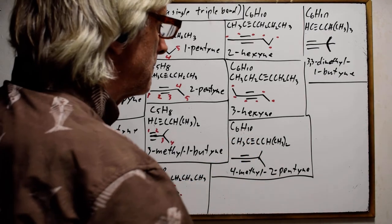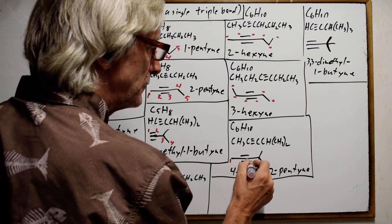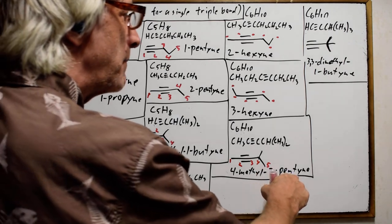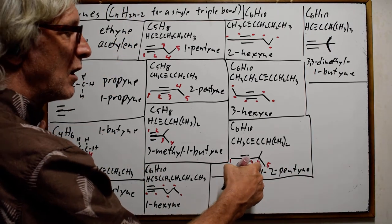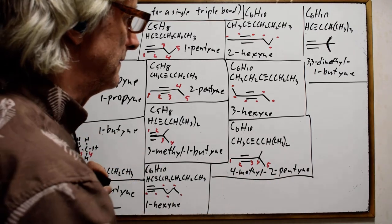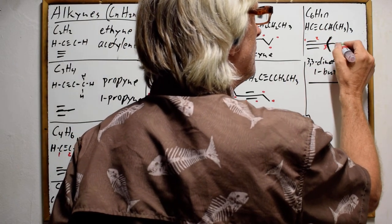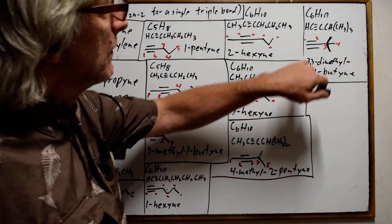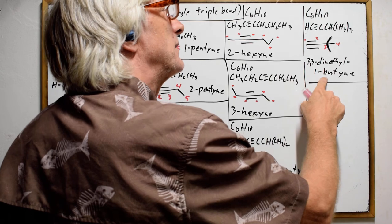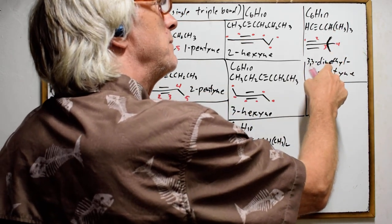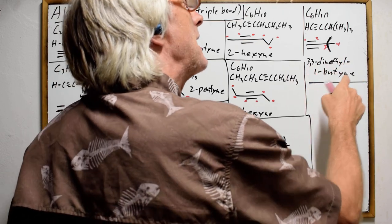Then we can rearrange some carbons so there's no longer one straight chain. Counting gives one, two, three, four, five — so the parent chain is a pentyne. The triple bond is between carbons two and three, giving 2-pentyne, and the fourth carbon has a methyl side group, making it 4-methyl-2-pentyne. For the last isomer, the longest chain is only four carbons, so it's a butyne. The triple bond is between the first and second carbons — 1-butyne — and the third carbon has two methyl groups, so it's a dimethyl. We give a number for both methyls: 3,3-dimethyl-1-butyne.